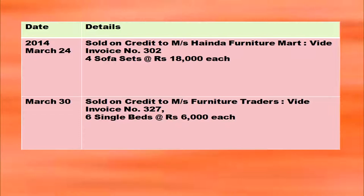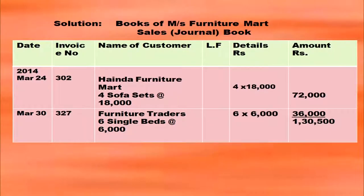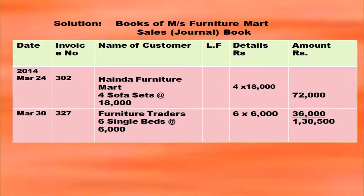More transactions for the same question. March 24, 2014: sold on credit to Messers Henda Furniture Mart, four sofa sets at Rs. 18,000 each. March 30: sold on credit to Messers Furniture Traders, six single beds at Rs. 6,000 each. For Henda Furniture Mart: 4 × 18,000 = 72,000 in the amount column. For Furniture Traders: 6 × 6,000 = 36,000 in the amount column. When all transactions are totaled, the grand total comes to Rs. 1,35,000.